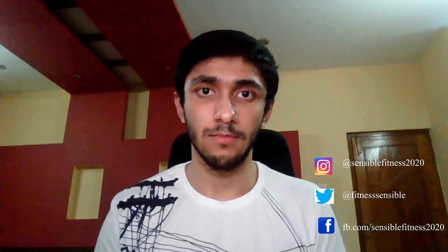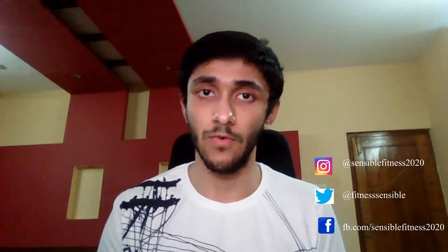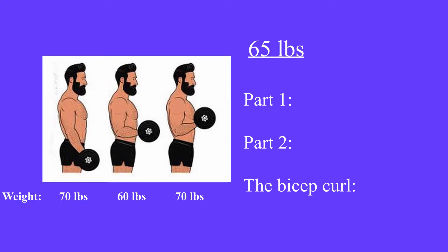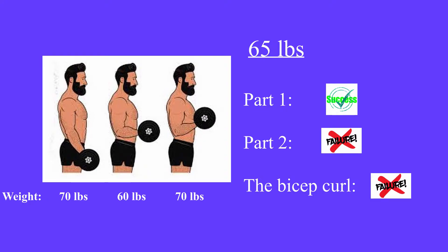For example, let's take the bicep curl as we talked about before. We know that at the 90 degree angle is when you're at your weakest. If you were to pick up a weight that is more than you can handle at that 90 degree angle, you won't be able to actually do the exercise. You may be able to pick it up and start curling it, but if you're not able to cross that 90 degree angle, you won't be able to do a full bicep curl.